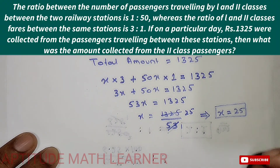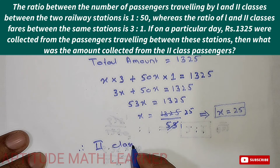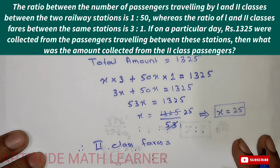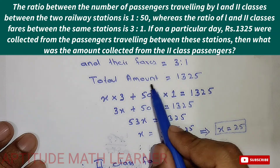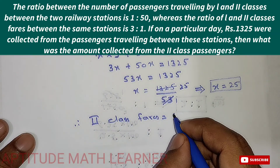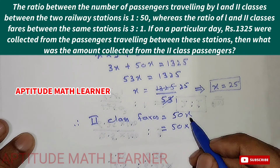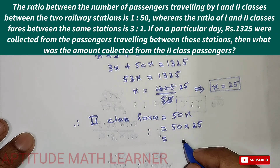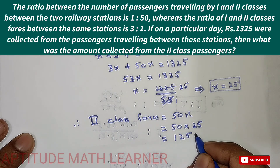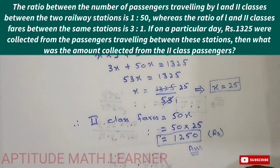Now for the second class amount, we multiply 50 by x. So 50x = 50 × 25 = 1250 rupees. Therefore, the amount collected from second class passengers is rupees 1250. I hope you have understood. Thank you very much.